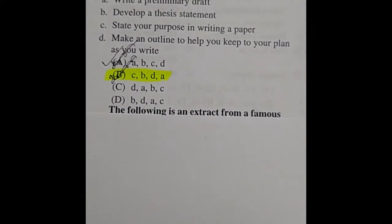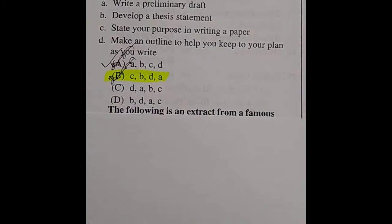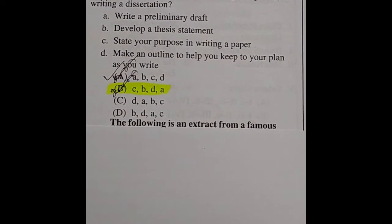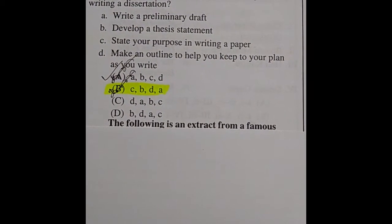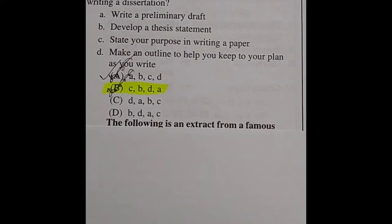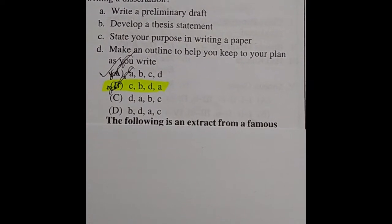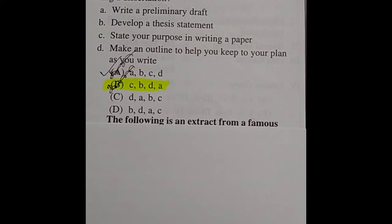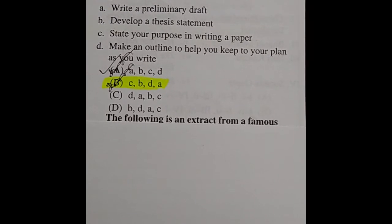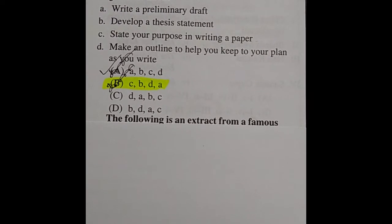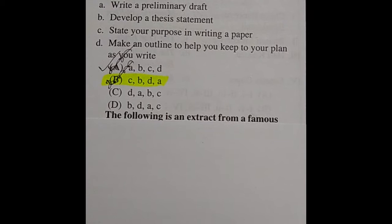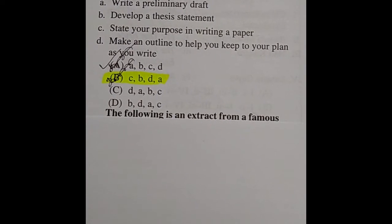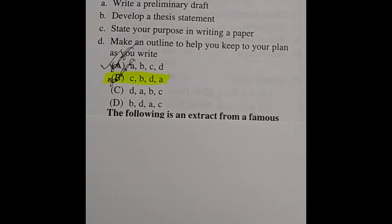Question 41: Which of the following is the proper sequence for writing a dissertation? Options: write a preliminary draft; develop a thesis statement; state your purpose in writing a paper; make an outline to help you keep to your plan as you write. The right answer is option B: C, B, D, A.